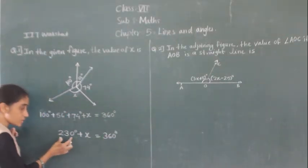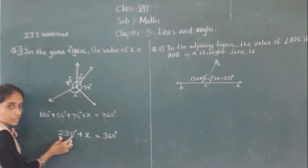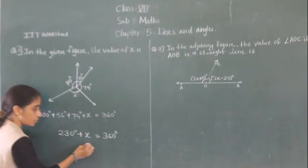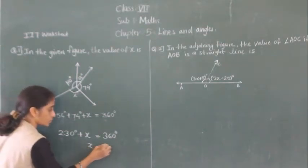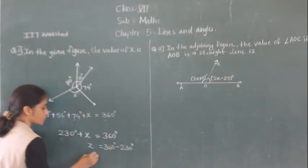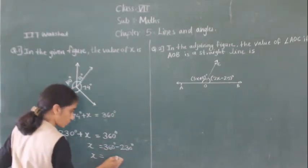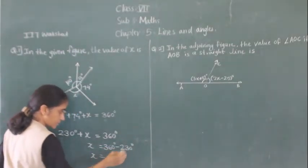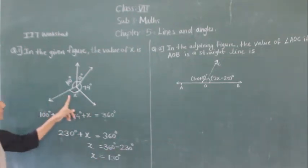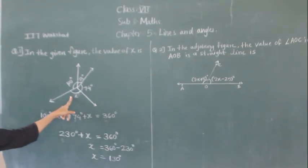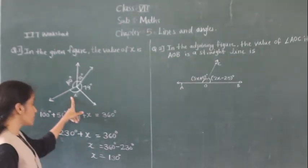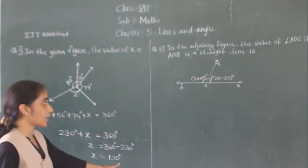We have to find the value of X. Since 230 is on the left-hand side as a plus, if we transfer it to the right-hand side it will become minus. So X is equal to 360 degrees minus 230 degrees. 0 minus 0 is 0, 6 minus 3 is 3, 3 minus 2 is 1. So the value of X is 130 degrees.